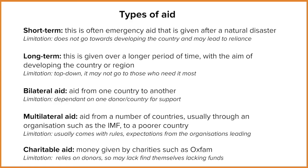There are limitations to each of these types of aid. For short-term aid, it is a bit of a crutch for a country. It's very easy for a country to start relying on this emergency aid — it doesn't help the country to develop. They become really reliant on external help, which doesn't help them in the long-term. Long-term aid is given over a much longer period, usually five or ten years, maybe even longer.